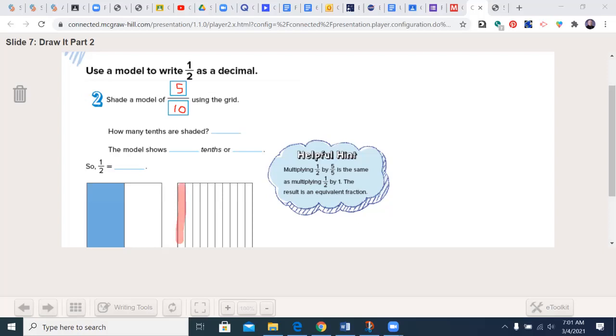So how many tenths are shaded? Your numerator. This model shows 5 tenths, or if we're saying it as a decimal, it would be 0.5. There's no whole ones. It's a decimal point because we're into a part of a whole, and there were 5 columns. And that's no different than what we did a little earlier in this quarter. So 1 half is equal to 0.5.